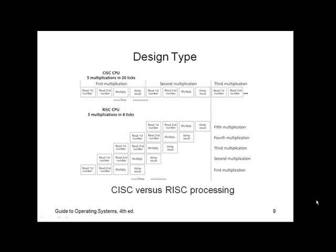This chart does a pretty good job of showing how a CISC chip works in relation to a RISC chip. A CISC chip in this demonstration has five multiplications in 20 ticks because it has to do each step sequentially. A RISC chip, through pipelining, can do five multiplications in just eight ticks, thereby significantly improving the speed of the processor.